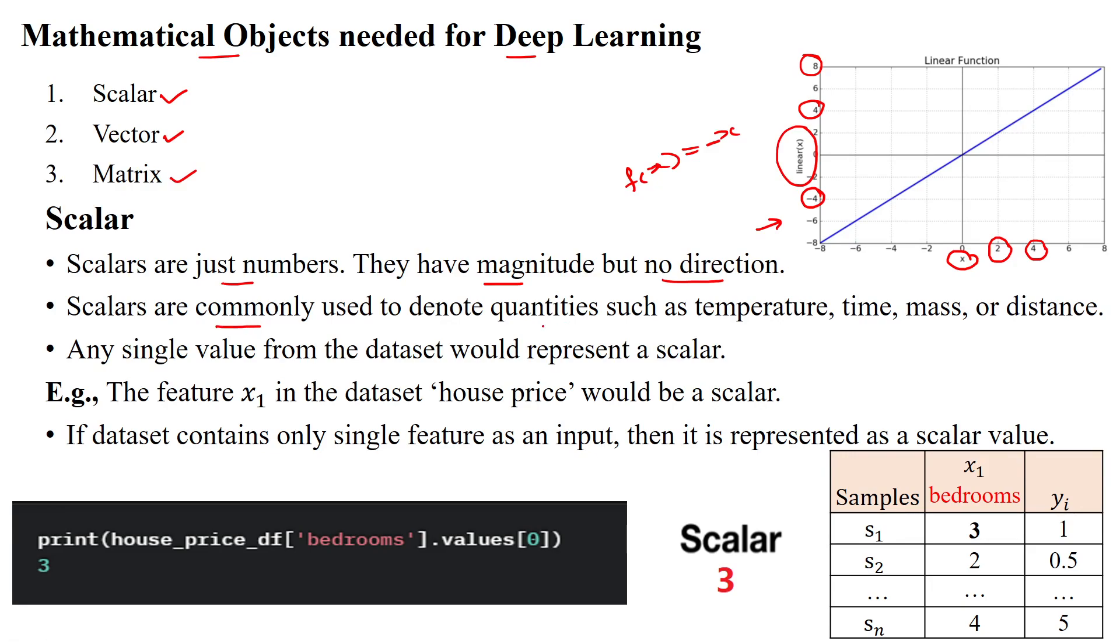Scalar values are commonly used to denote quantities such as temperature, time, mass, or distance values. Any single value from the dataset would represent a scalar value. For example, a dataset is given here.